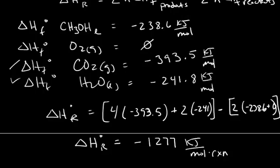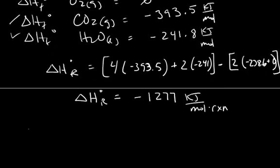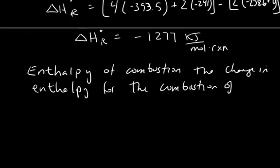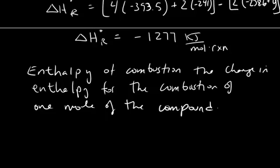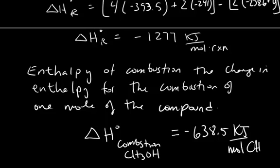If someone asks for the heat of combustion for methanol, that has a special definition. The enthalpy of combustion for any combustible material is defined as the change in enthalpy for the combustion of 1 mole of the compound. Since our balanced reaction has 2 moles of methanol, the enthalpy of combustion per 1 mole of methanol would be this value divided by 2, which equals −638.5 kJ per mole of methanol burned.